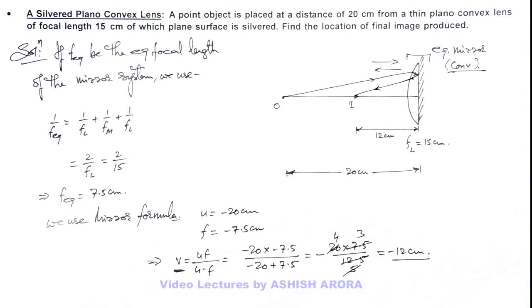And we can draw the ray diagram as from object a light ray goes, it gets refracted then reflected and finally it comes to this position. This is the way how image is produced finally by this combination of 2 lenses and a mirror. So here this will be the final answer of this problem.